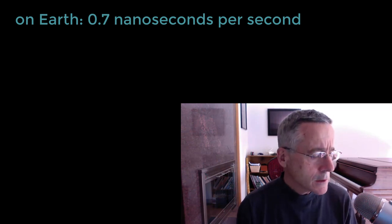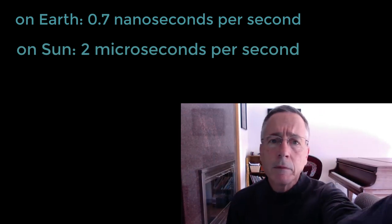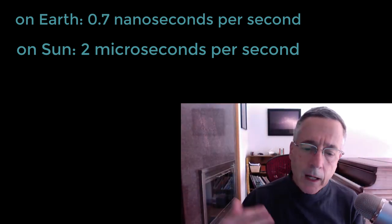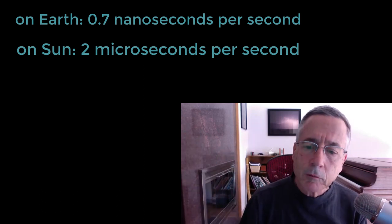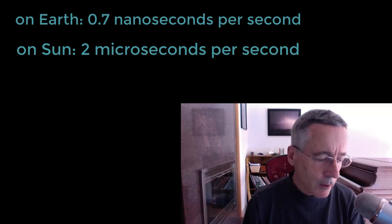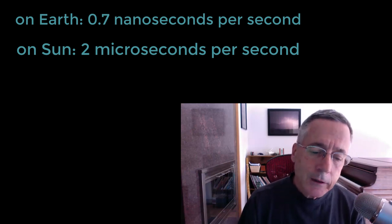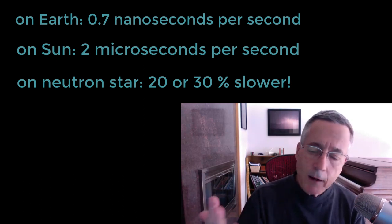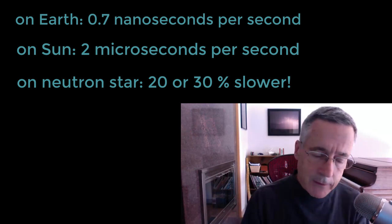Coming from the surface of the sun, it's on the order of about two microseconds per second that the clock would be running slow by. You can actually see the spectral lines coming from the sun are shifted in frequency a little bit due to this gravitational redshift — the fact that time appears to be running a little more slowly by about two microseconds per second. But if you get to a neutron star, it's actually running slowly by on the order of 20 or 30 percent — a really significant difference between how fast time runs on the surface of a neutron star and for an observer farther away.